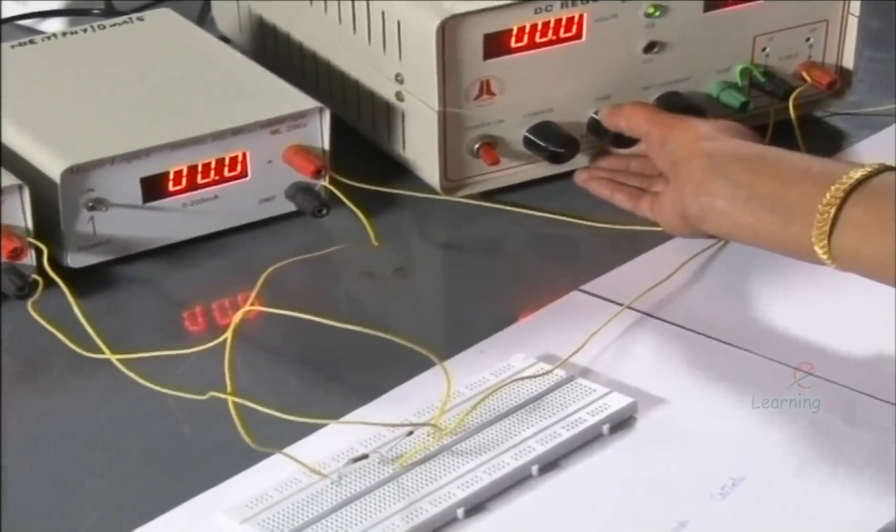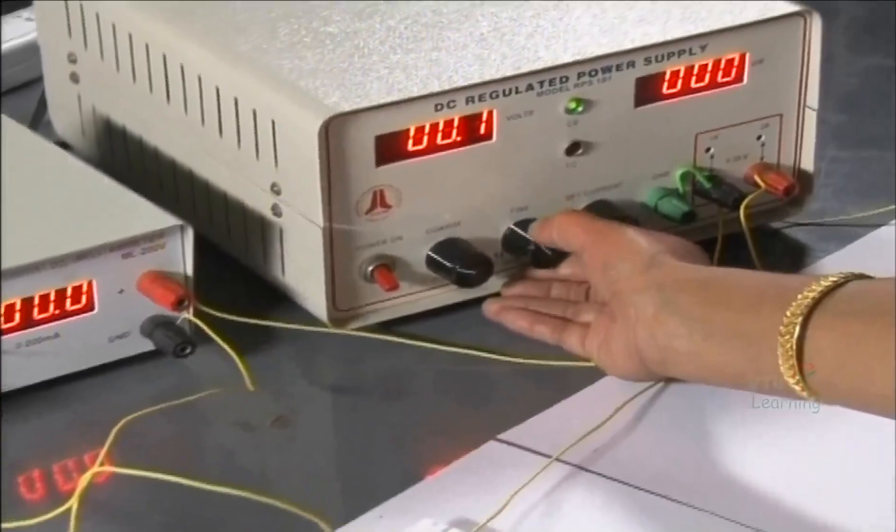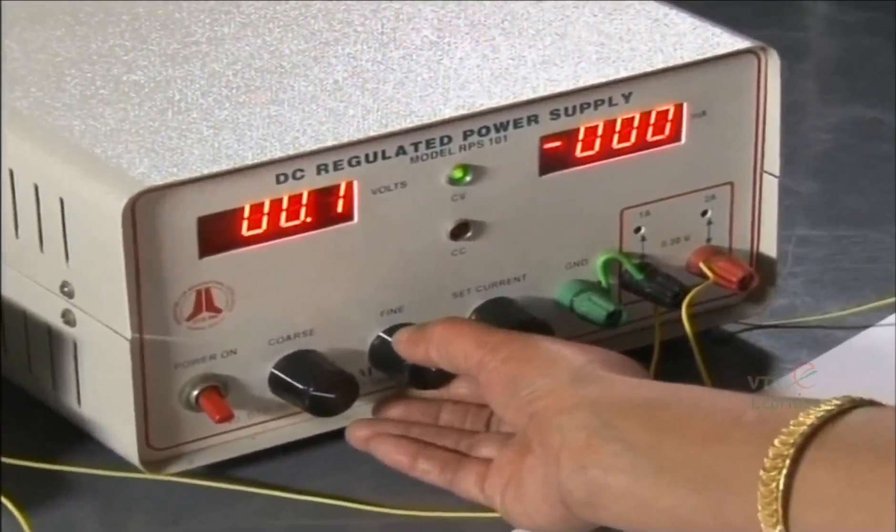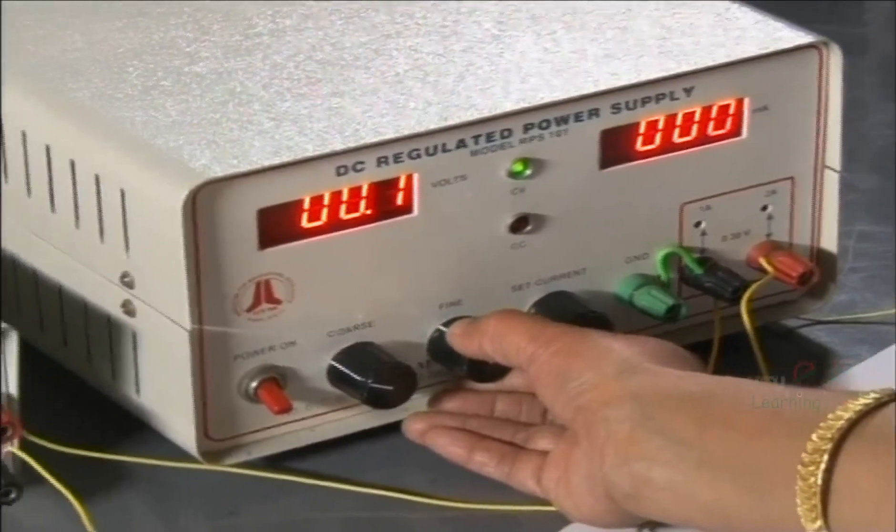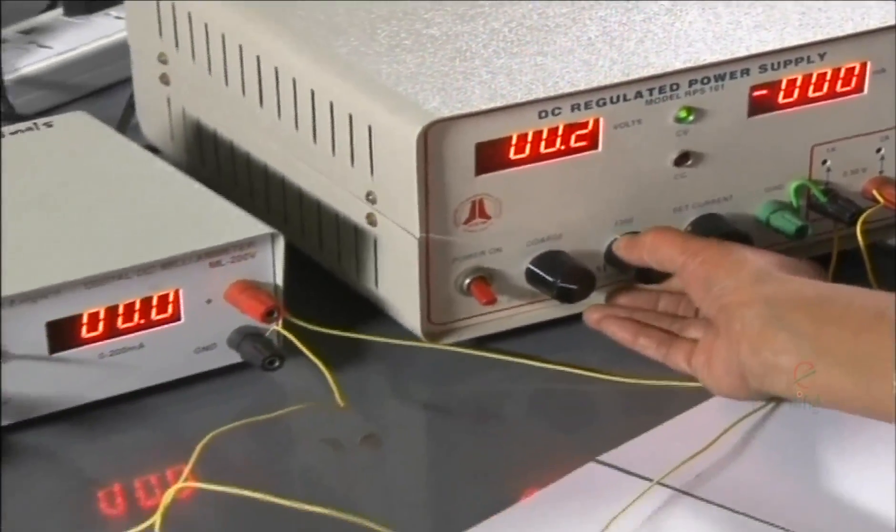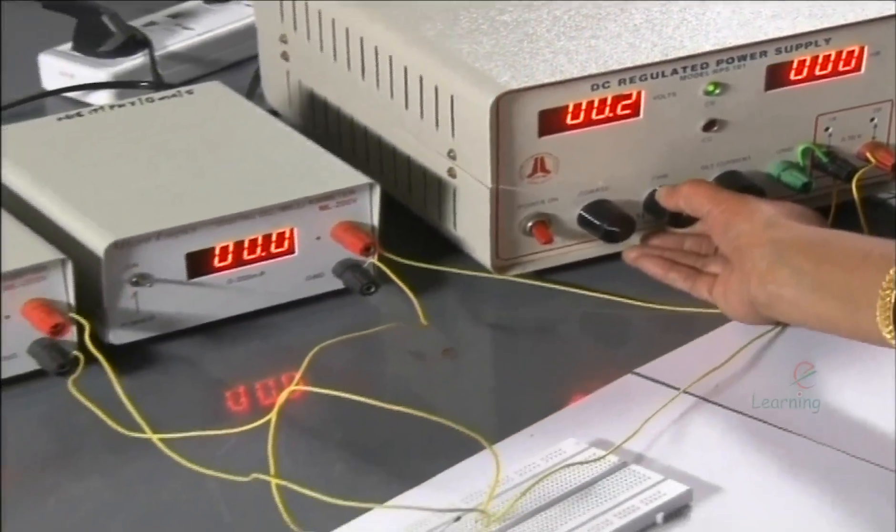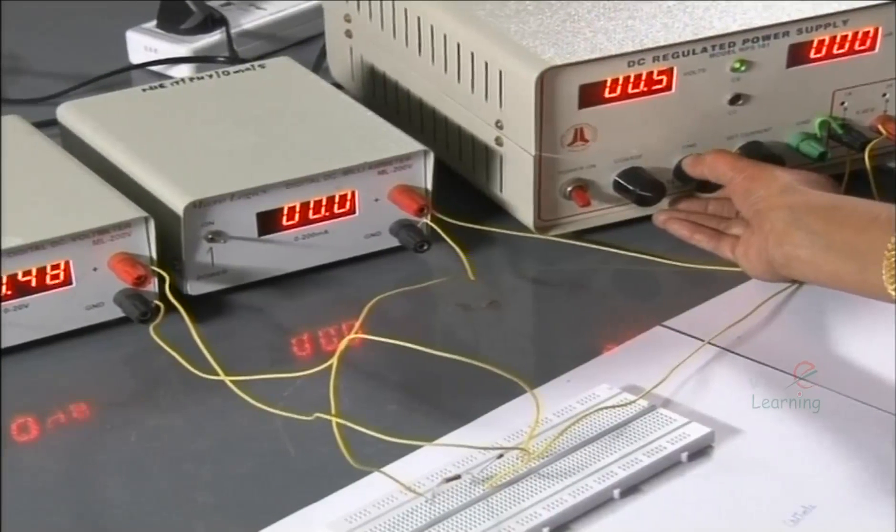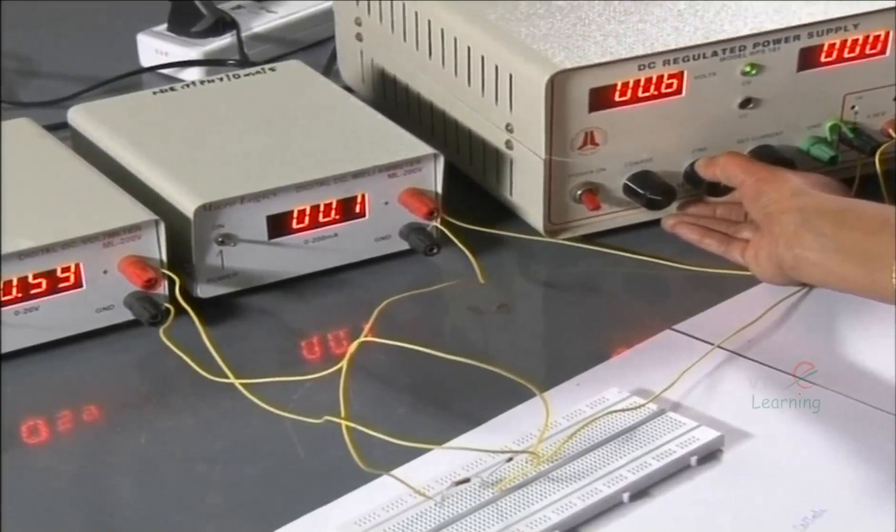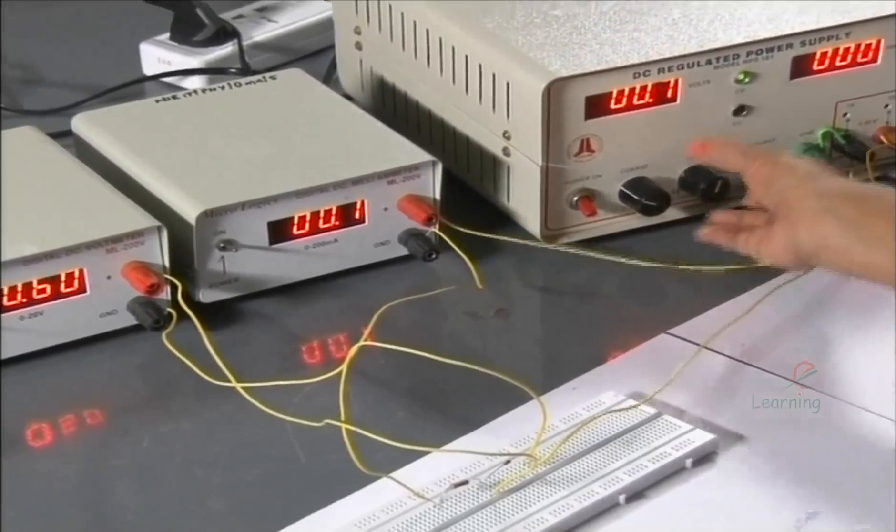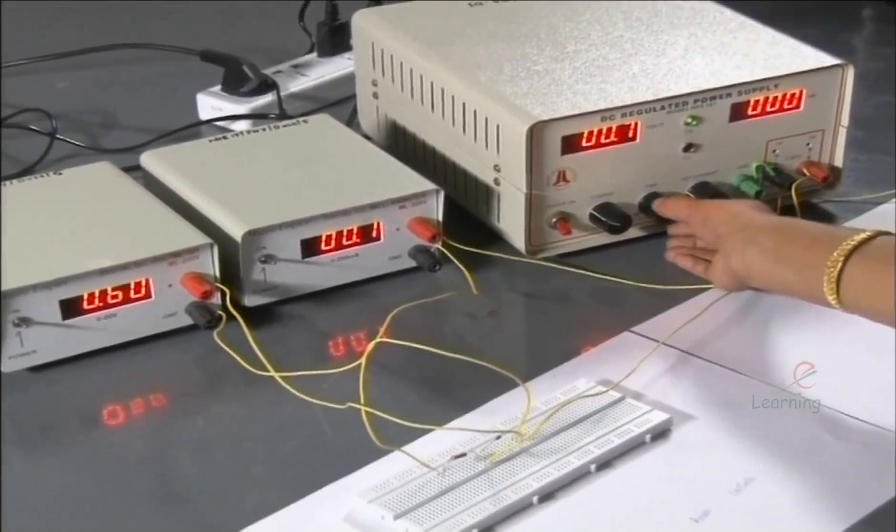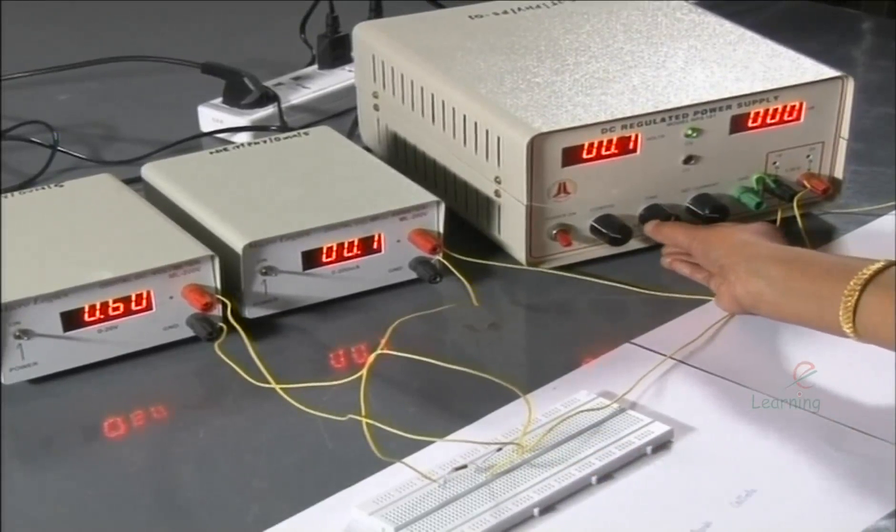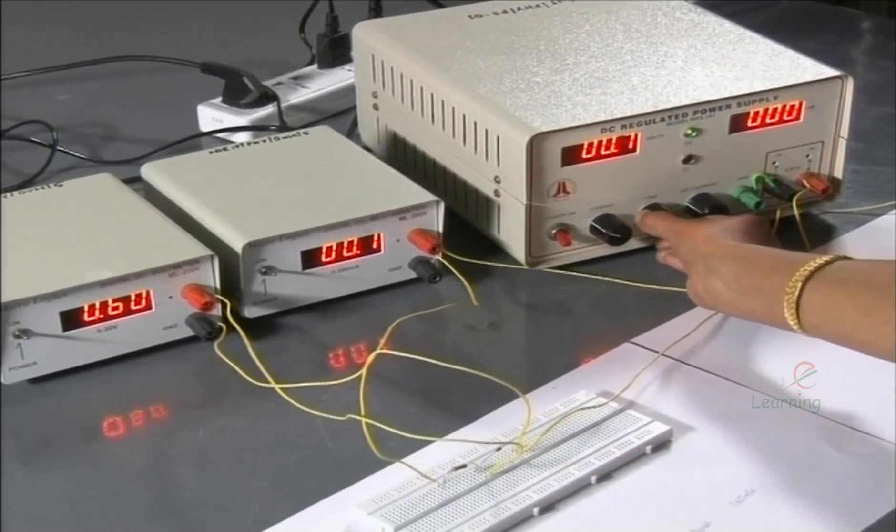Vary the voltage in small steps say 0.1. You note that the current through the circuit is 0.0 at 0.2, 0.3, 0.4, 0.5 volts. At 0.6 volts it is 0.1 milliamps. That means the junction started conducting from this point.